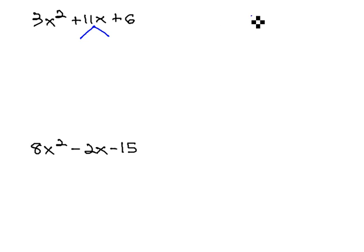The way we decide which terms to split it into is we draw this little cross, and we multiply to AC, where A is the first number and C is the last number. 3 times 6 is 18, and we have the 11 in the middle that we want to add to.